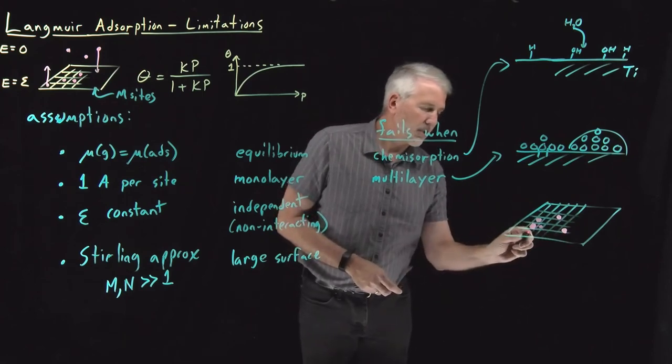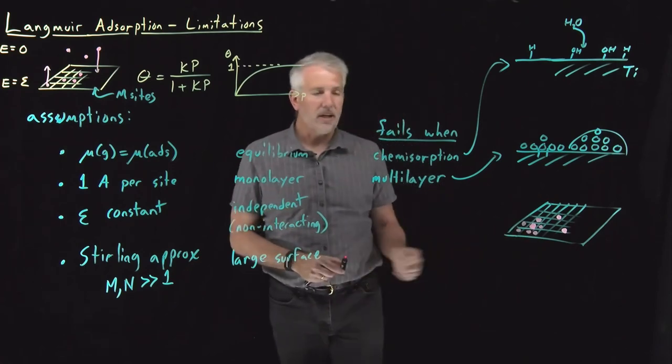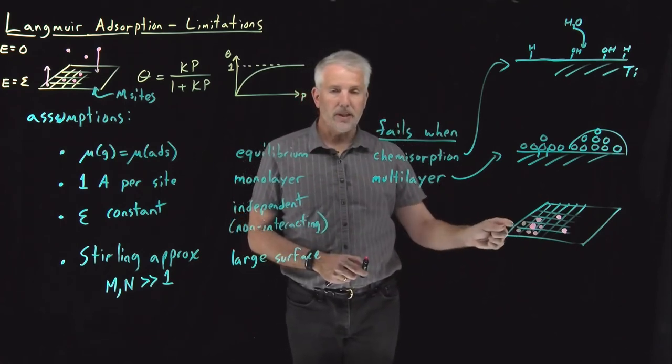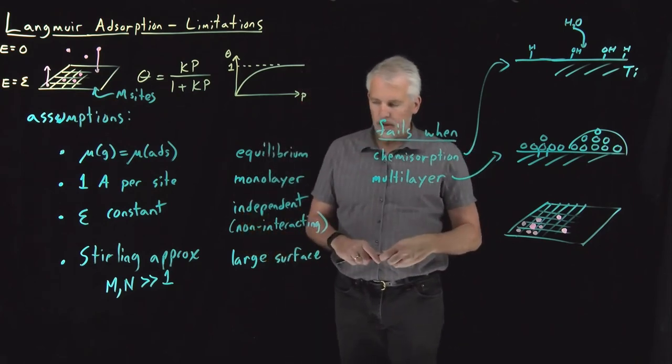However, once I've got one molecule adsorbed in a particular spot, I tend to get more molecules adsorbing nearby because that's a favorable interaction. So that's an example of what we can call cooperative adsorption.